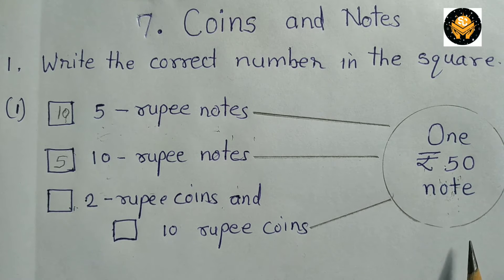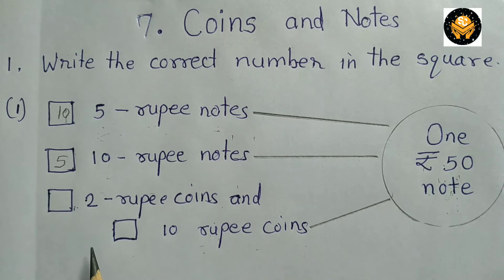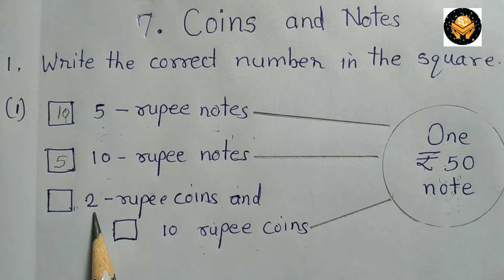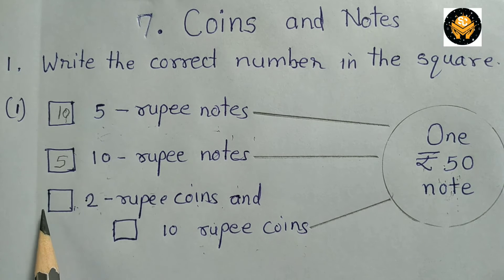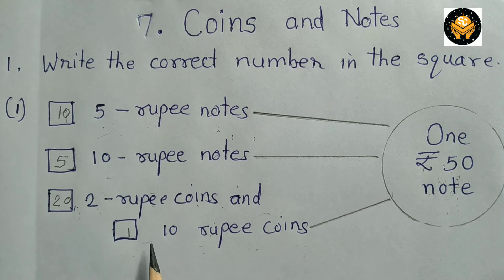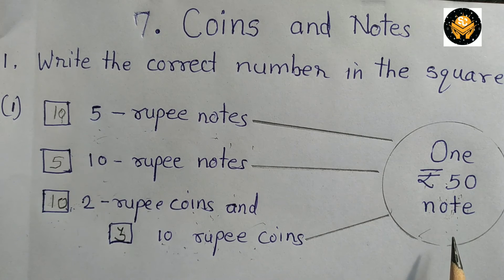Now if you want the change in the form of 2 rupee coins and 10 rupee coins, there are many ways to find the answer. For example, 20 two-rupee coins give 40 rupees, plus 1 ten-rupee coin gives 50 rupees. Another way: 10 two-rupee coins and 3 ten-rupee coins also make change for 50 rupees.